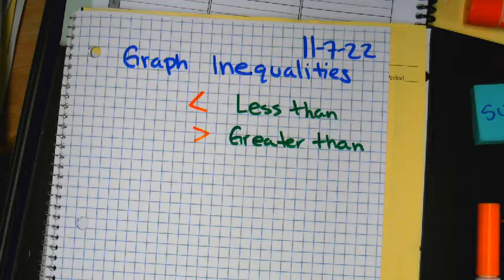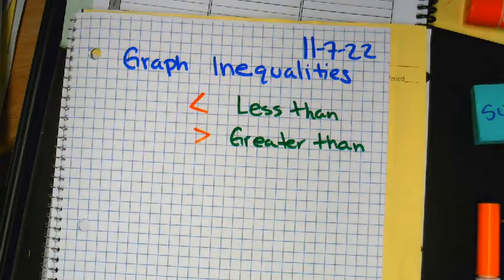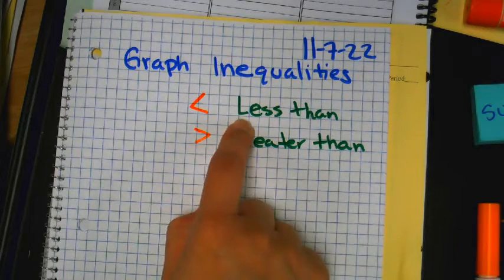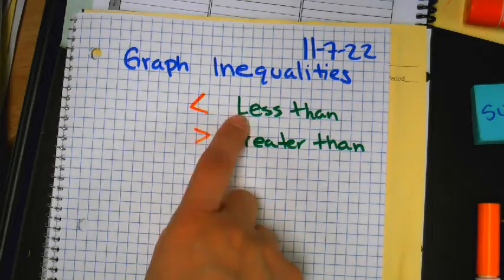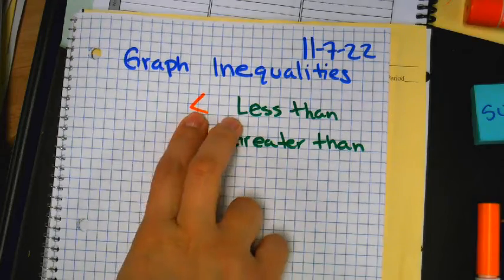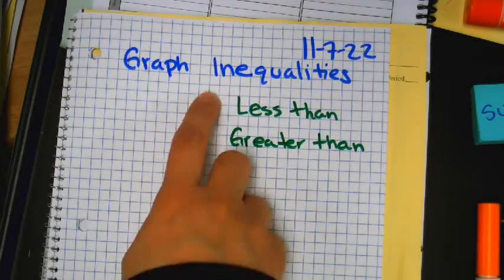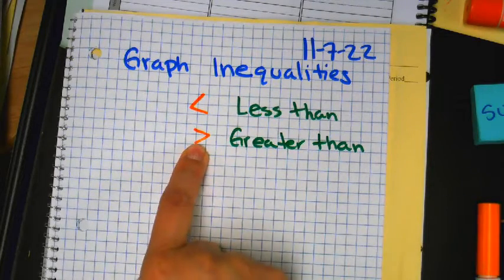Here is how I need you to memorize this for the rest of your life. If a teacher shows you this or this, you know the difference. This one is your less than. Do you see how it's the same direction as the letter L? So the one that looks like an L is the less than. The one that's totally not in the direction of an L — that's the greater than.